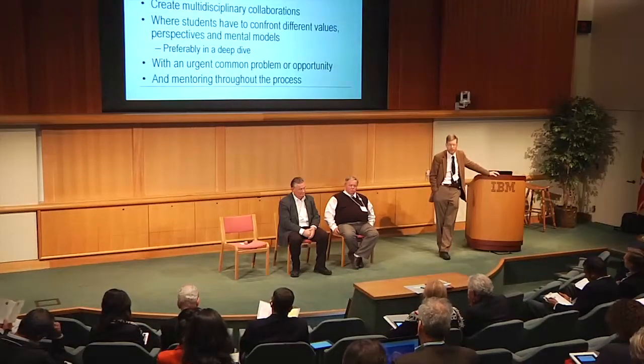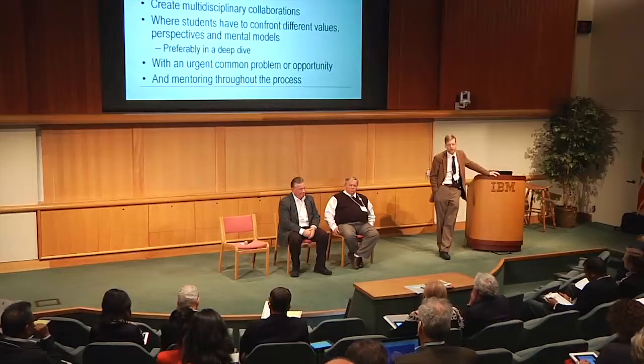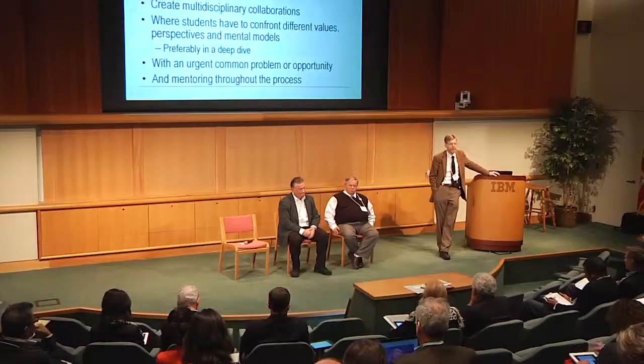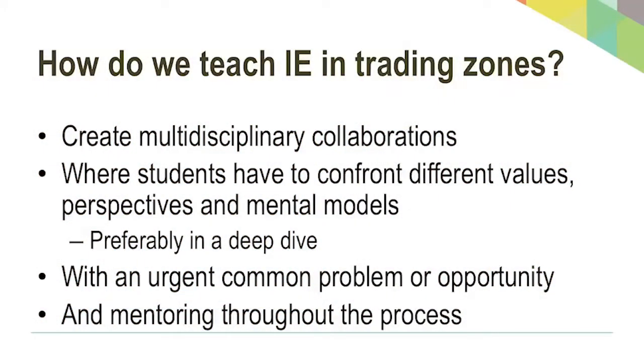Get students into situations where they have a compelling reason to work together, preferably in a deep-dive situation where they're spending a lot of time together — it's hard when they're running from class to class. Give them an urgent common problem or opportunity, such as working with a business partner. You need to mentor throughout the process, understanding where they need to get in terms of T-shaped expertise. And concepts like trading zones need to be explored more thoroughly so we know more about how to teach students to apply them — and that application will improve the theory.